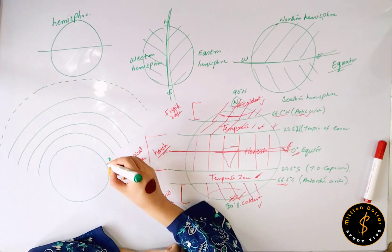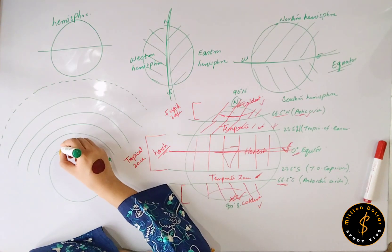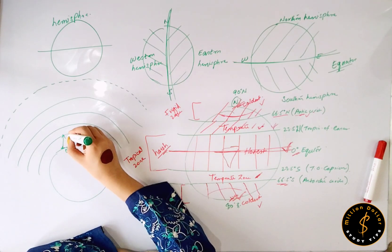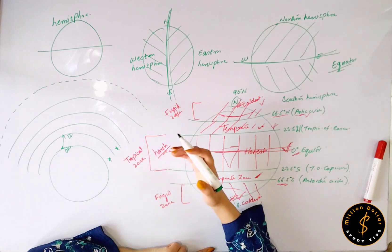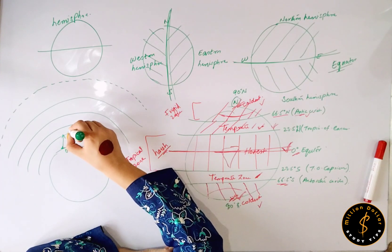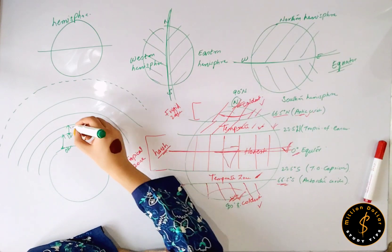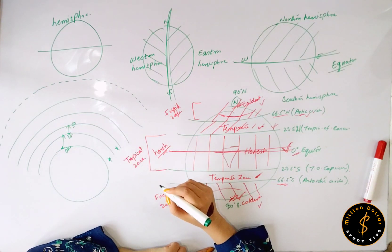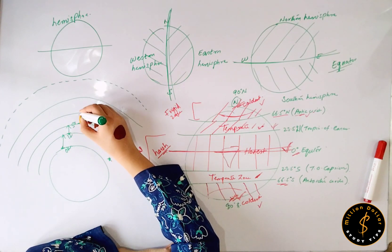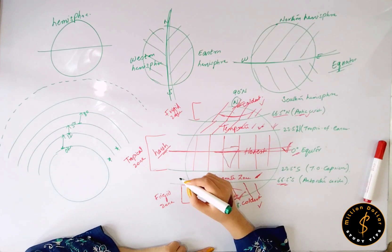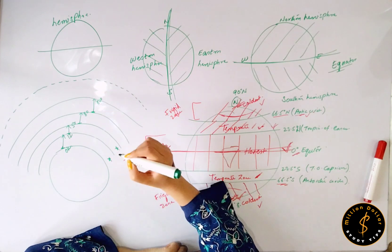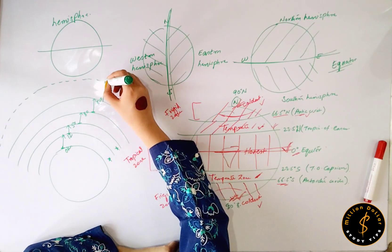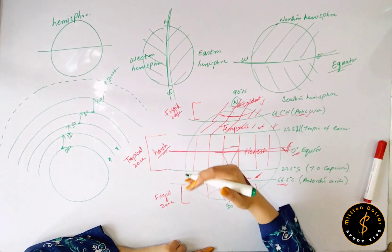Now Troposphere starts from 0 km and goes up to 12 km from the surface of your planet Earth. Stratosphere, the second layer, starts from 12 km and goes up to 50 km. Mesosphere, 50 km to 80 km. Thermosphere, 80 km to 800 km. Exosphere goes up to 3000 km from the surface of your planet Earth.